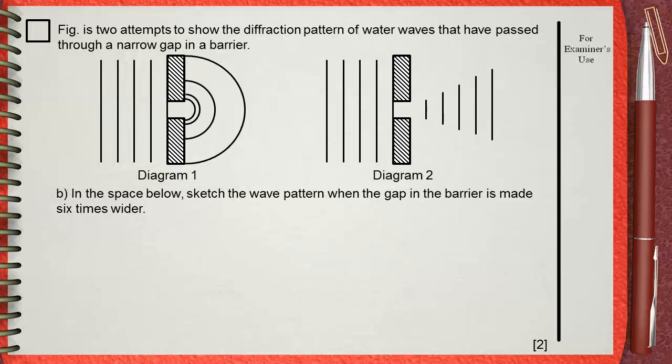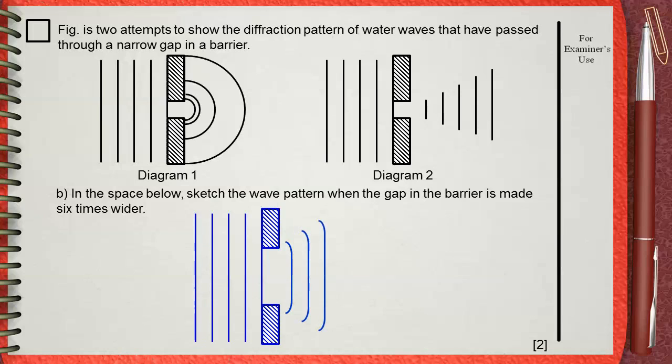These are the wave fronts of the incident wave. If the gap is made 6 times wider than above, the shape of the diffracted wave will be a little different. Wave fronts will take the shape of straight lines which are curved from the ends.